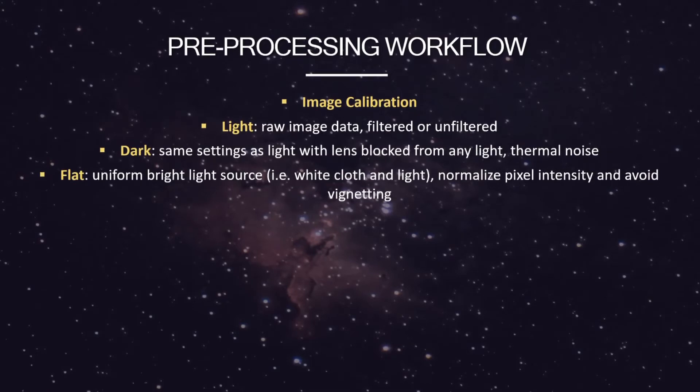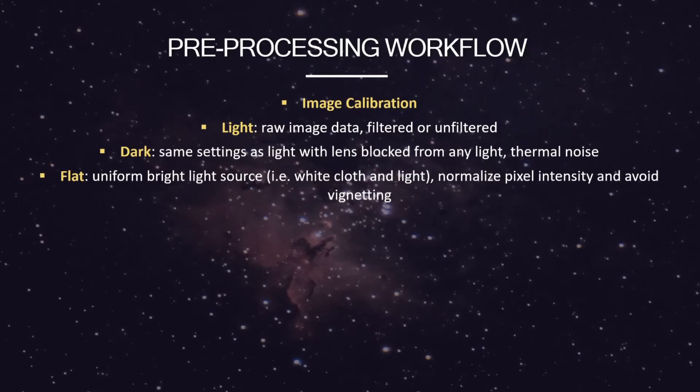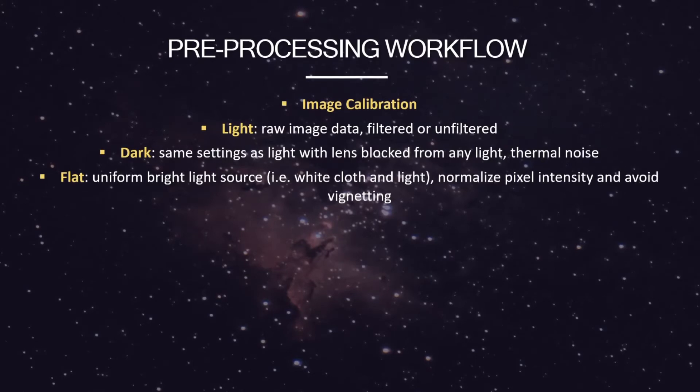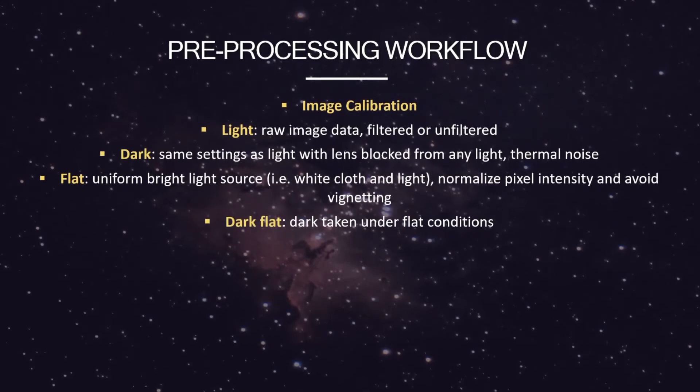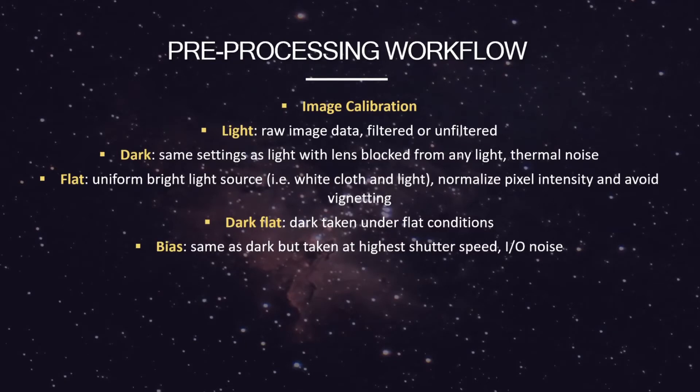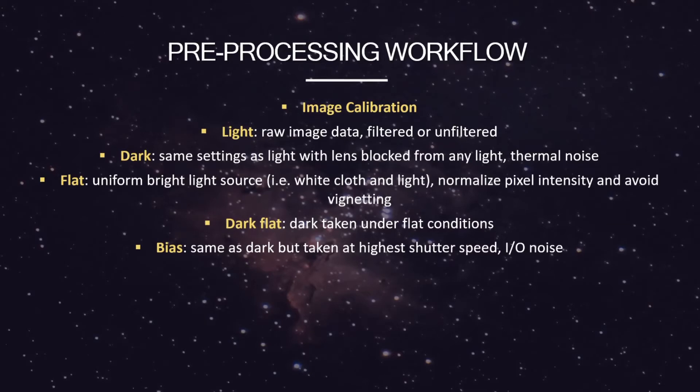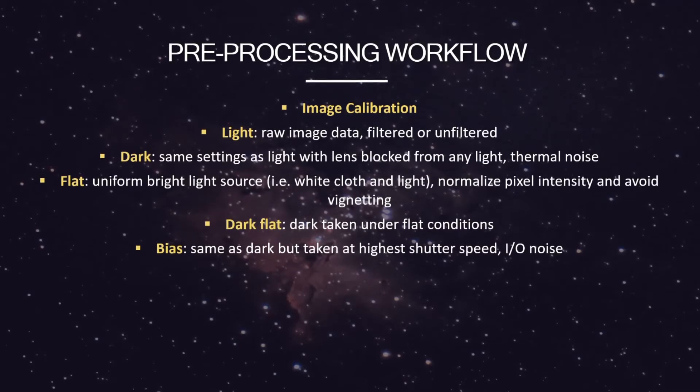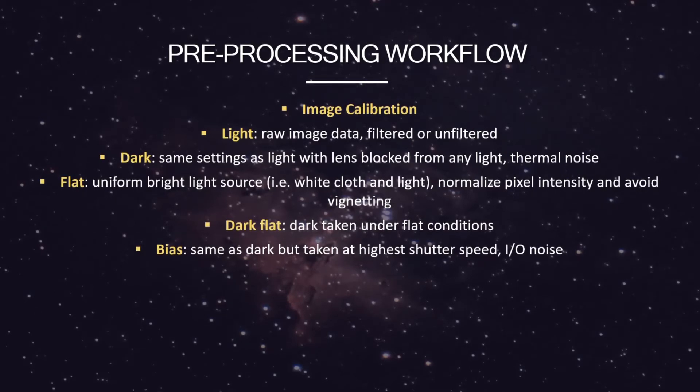Flats are another way to also capture a uniform white image, and any deviation from that represents things like dust, aberrations in the lens, vignetting caused by the curvature of the lens. That can also be corrected. You have dark flats, which are darks taken under flat conditions, and then you have a bias. A bias is like a dark, but you do the fastest exposure time, the highest shutter speed. Basically, the aperture is open for the least amount possible to get a baseline reading of noise.